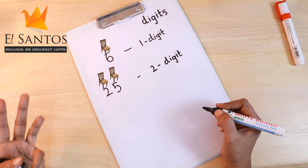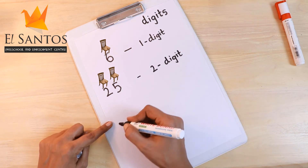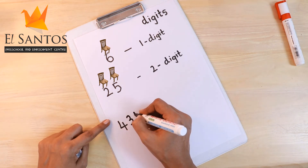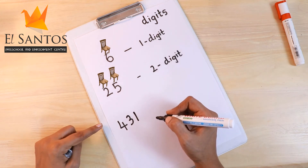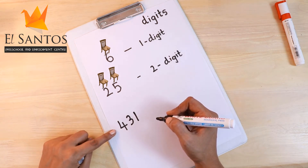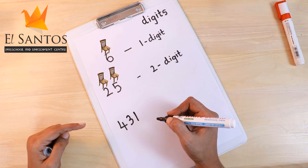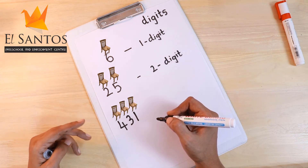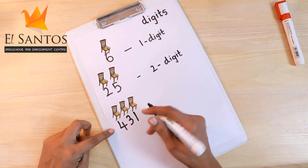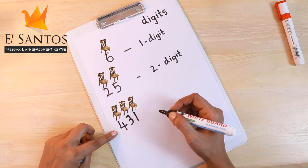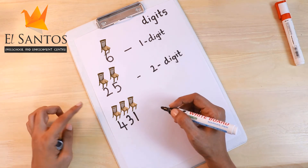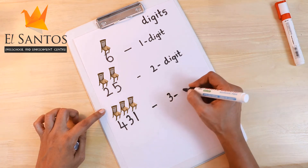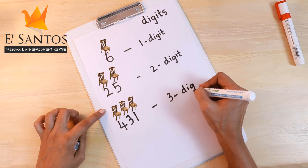If there are three numbers, let's write four hundred and thirty-one. Then they need three places, right? So a number with three places needs three chairs. So we will call it a three digit number.